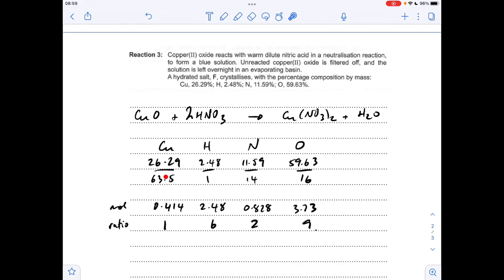So just percentage over Mr, we get the moles to three significant figures. Remember, divide by the smallest, which is that one there, so we get this ratio here. Now remember, we know it's copper(II) nitrate, we just need to establish how many waters of crystallization it's got. The giveaway is the fact that it's got six H's, so it must have three H2O's. That means F is Cu(NO3)2·3H2O.